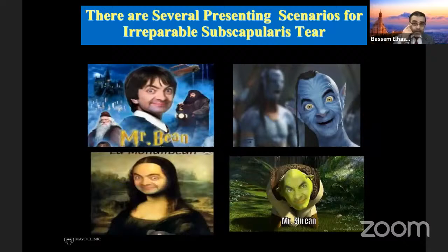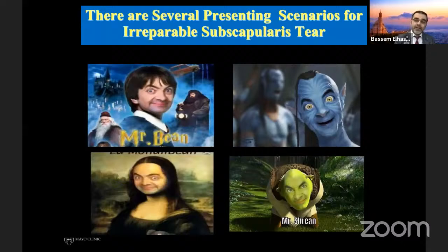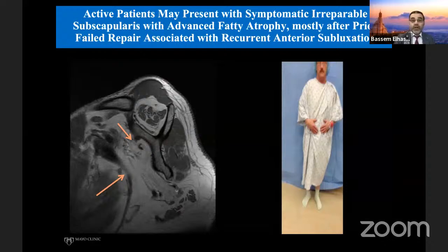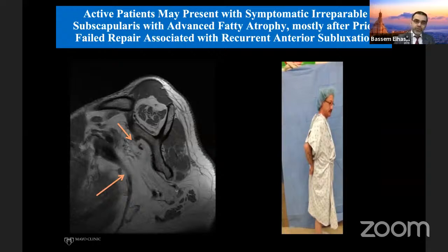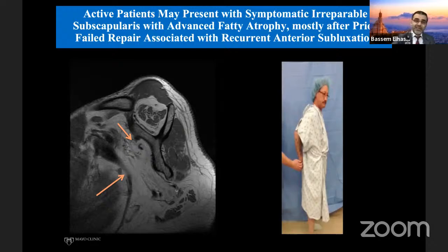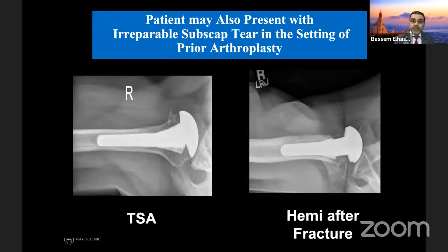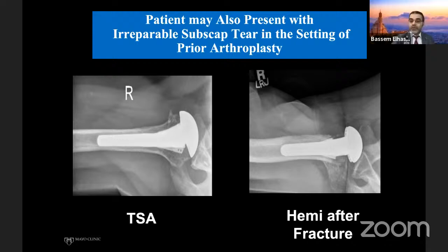Whenever you have an irreparable anterior superior rotator cuff tear, it's not simply about having no subscapularis. There are several scenarios. With subscap insufficiency alone, patients typically have limited internal rotation, pain, and occasional anterior subluxation, but function is not too bad unless the supraspinatus is also involved. A harder situation arises in young patients with a bad comminuted fracture of the proximal humerus treated with hemiarthroplasty, where the patient starts to subluxate because there's no subscapularis.